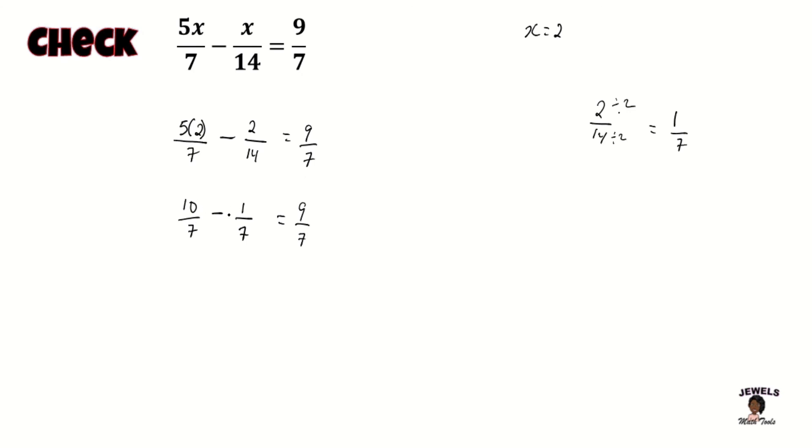So I won't have to worry about finding the LCD since they will all have the exact same denominator. And if you look at our fraction where 10 minus 1, it is equal to 9 sevenths. So since both sides of my equation works out to the exact same answer, this tells me that my x equal 2 is the correct answer for my equation.